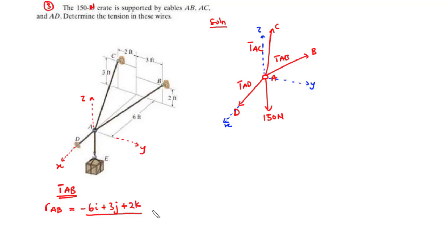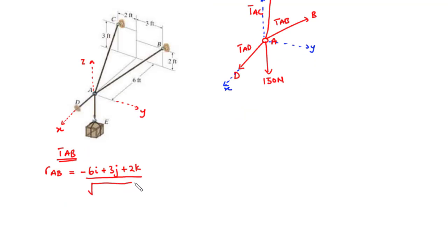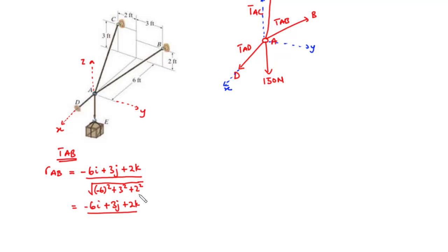We divide the whole expression by the square root of the sum of the squares of the coefficients. So we have negative 6I plus 3J plus 2K, all divided by the square root of: negative 6 squared is 36, plus 3 squared is 9, giving 45, plus 2 squared is 4, giving 49. The square root of 49 is 7. Therefore the unit vector is negative 6I over 7 plus 3J over 7 plus 2K over 7.